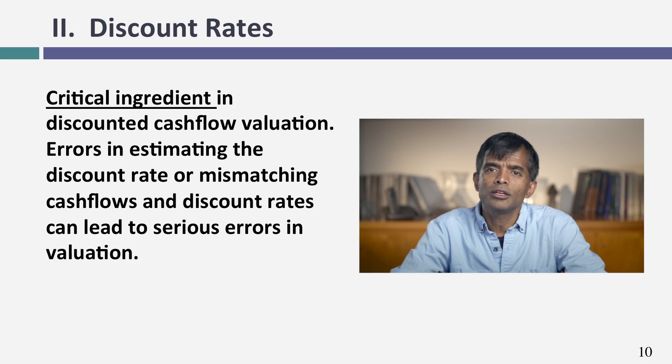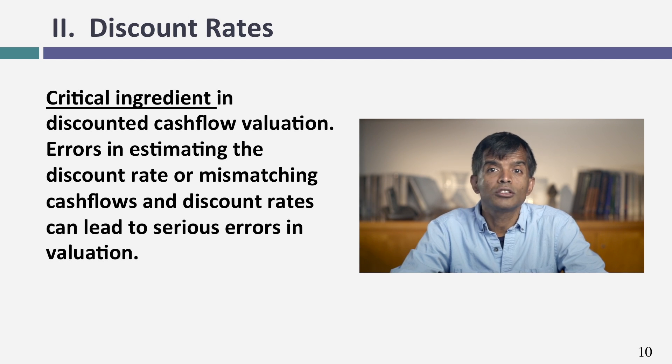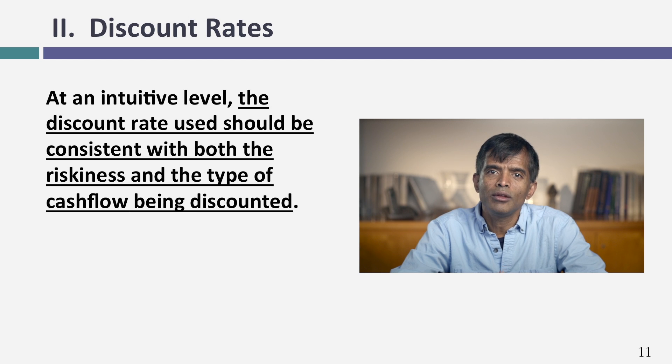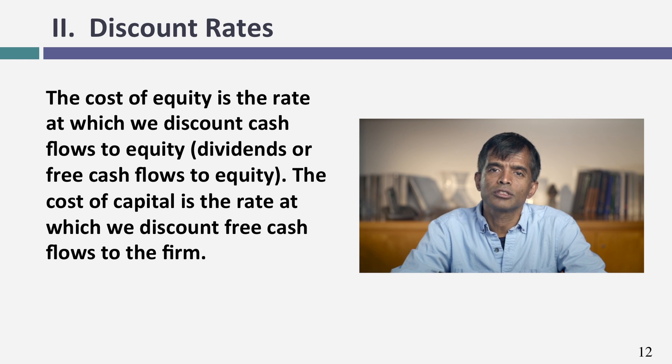Now let's talk about discount rates. I personally believe that in most valuations, we spend far too much time estimating discount rates and too little time estimating cash flows. When you have a screwed-up valuation, it's usually because you got the cash flows horribly wrong, not the cost of capital. The key thing to remember about discount rates is they must be defined consistently with your cash flows: if cash flows are in U.S. dollars, use a U.S. dollar discount rate; if cash flows are to equity, use a cost of equity; if cash flows are to the firm, use the cost of capital.